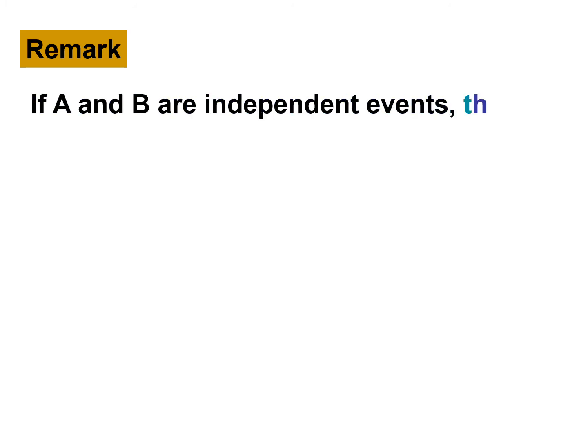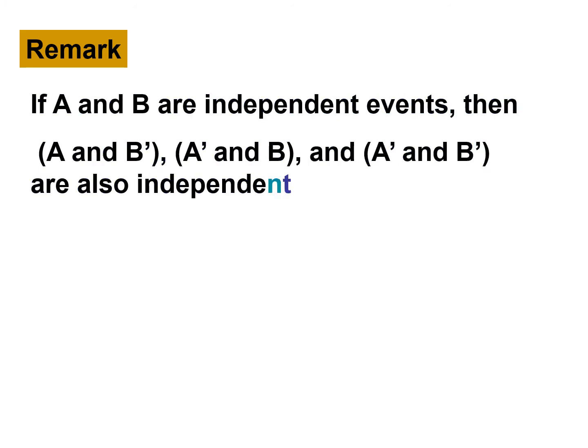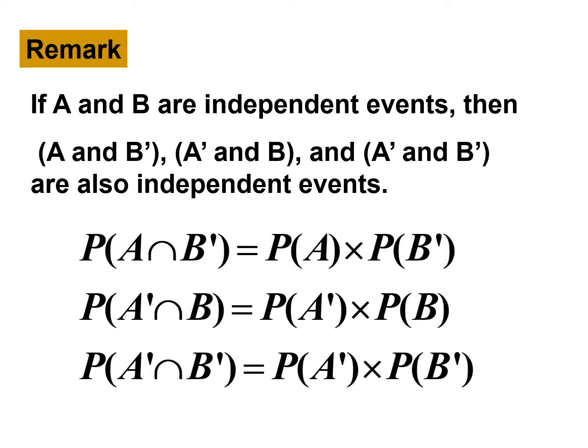Remark: if A and B are independent events, then (A and B'), (A' and B), and (A' and B') are also independent events. So if you have any intersection between these events, you just multiply both events.